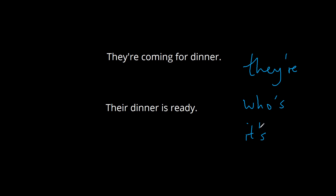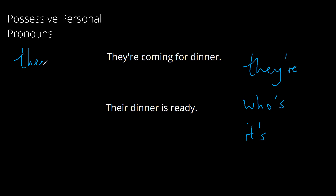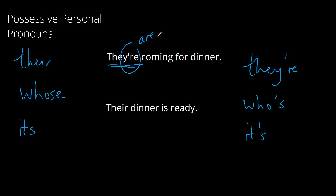The problem is that these contractions are very similar to three possessive personal pronouns: their, whose, and its. These pronouns show possession, and you can see the difference if you look at one example — they're and their in these two sentences. So they're coming for dinner — we've shortened this, so this should actually say they are. And their dinner is ready — in this case we're showing possession; the dinner belongs to them.